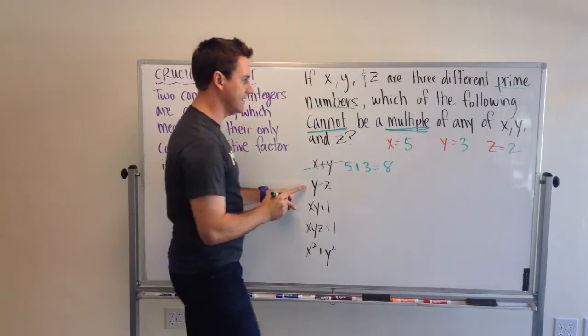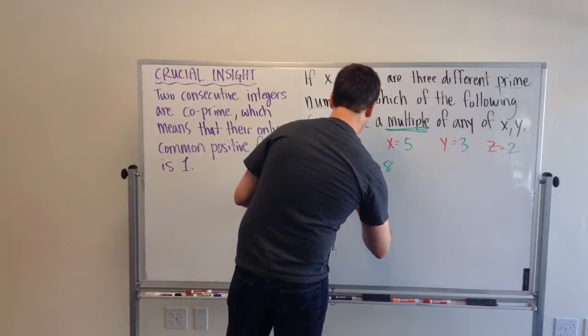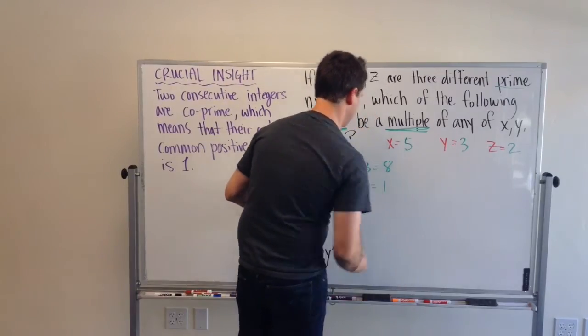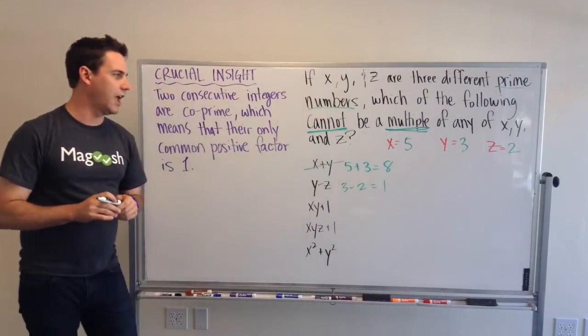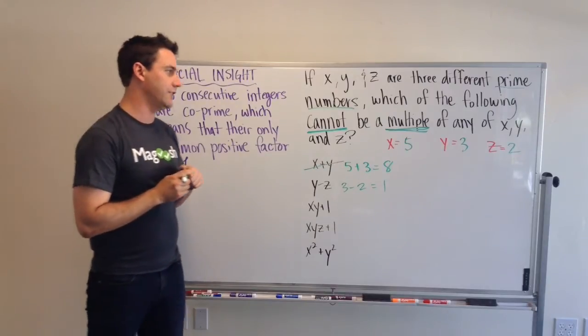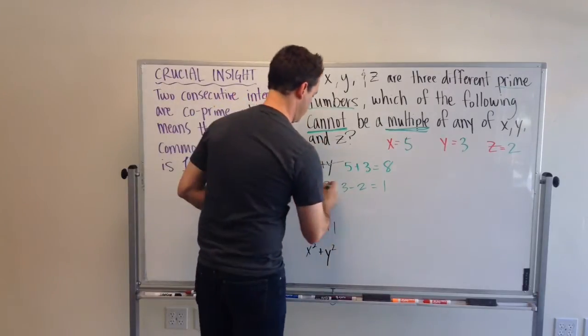y minus z, y, 3, minus 2, equals 1. And, is 1 a multiple of these numbers? It's a multiple of all these numbers. So, we can eliminate it.